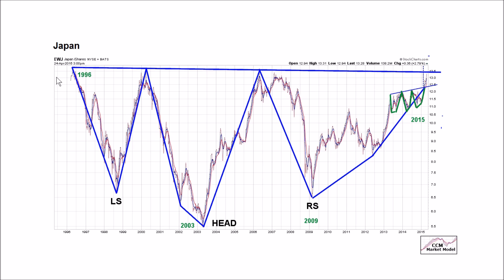This is a weekly chart of EWJ, Japan. From a very long-term perspective going back to 1996, we can see somewhat of a left shoulder, a head lower than the left shoulder, then a right shoulder made in 2009 which is higher than the head. We may be completing that pattern — a bullish breakout to the upside would be very significant. There's also a mini inverse head and shoulders, and projections suggest decent odds of clearing the long-term resistance line, which would have bullish implications for EWJ.